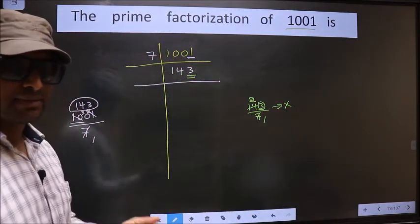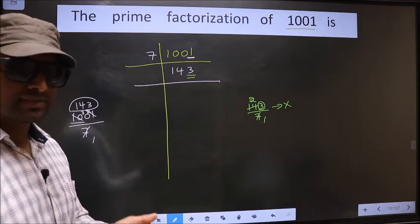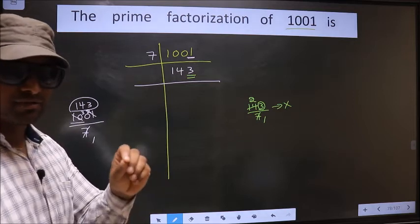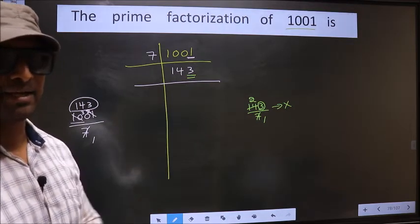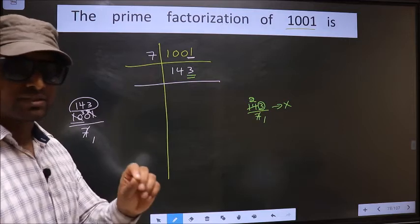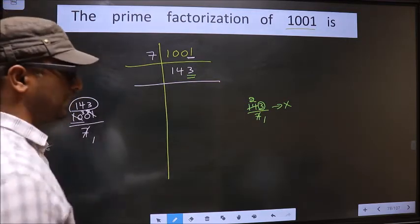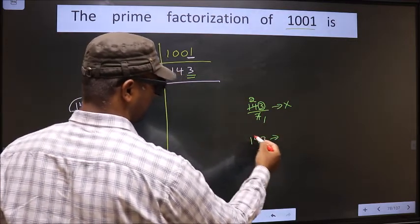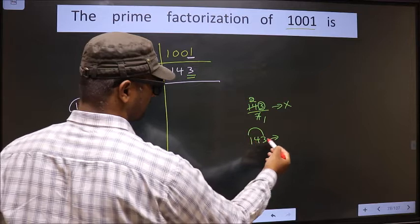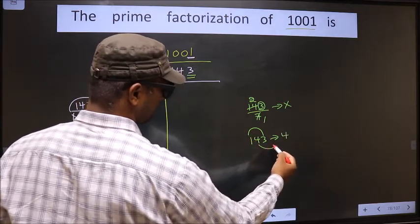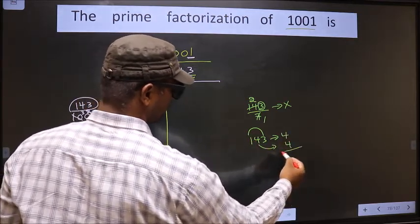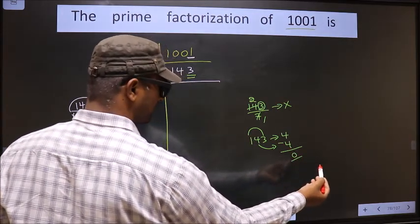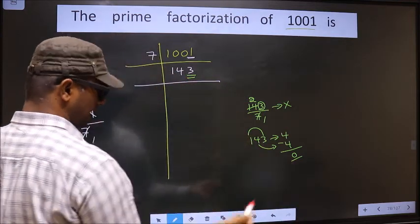Next prime number is 11. To check divisibility by 11, we take the difference of the sum of alternate digits. For 143: add alternate digits 1 plus 3, which gives 4. The left-out digit is 4. Subtract: 4 minus 4, we get 0. Is 0 divisible by 11? Yes, so this number is also divisible by 11.